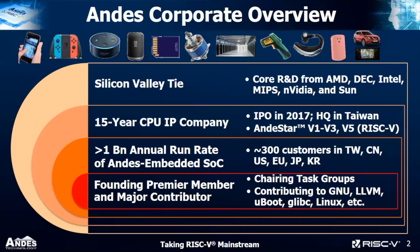AndesTech is a founding platinum member of the RISC-V Foundation and a major contributor to RISC-V. We are chairs for several task groups and contribute to many areas of the RISC-V ecosystem. We have more than 1 billion annual run rate — over 1.5 billion this year — and about 300 customers around the world. As a 15-year leading CPU IP vendor, we have a lot of experience in this field.